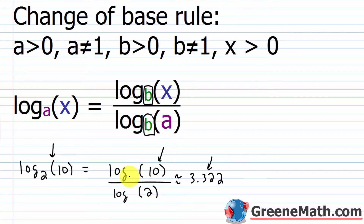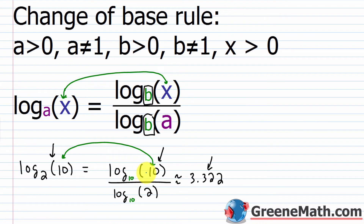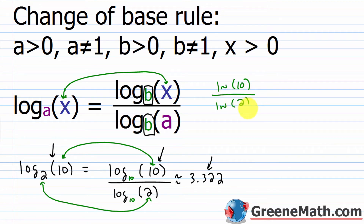So the base in the numerator and denominator are the same — base 10 — which is why I can use the log shortcut. Following the pattern: your argument goes as the argument in the numerator logarithm, and the base becomes the argument in the denominator logarithm. You'll get the same result if you use the natural log: ln of 10 over ln of 2 also gives approximately 3.322. So whether you use the natural log or the common logarithm, it's the same answer.